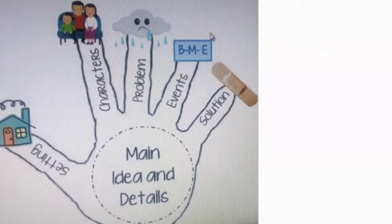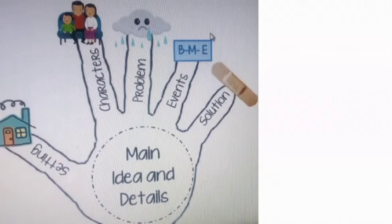The next element is character. Characters may be a man, an animal, or an imaginary character like a giant, monster, or fairy. They are called characters because they play a very important role in the story. The next is problem, which is also called conflict — the hero and the protagonist of the story faces some problem.